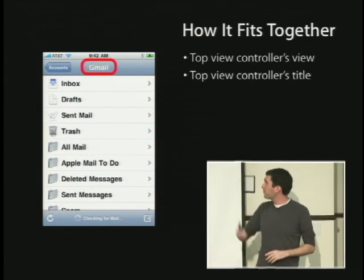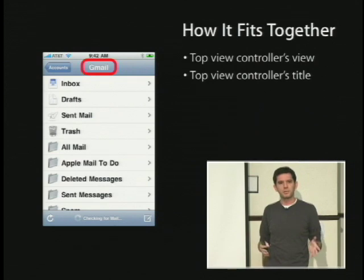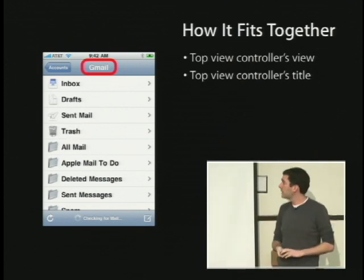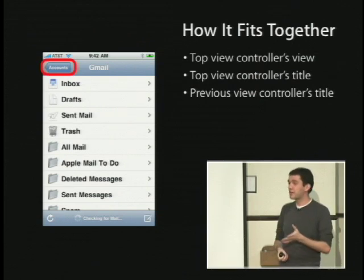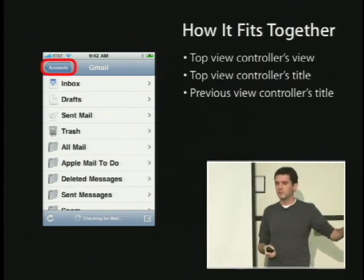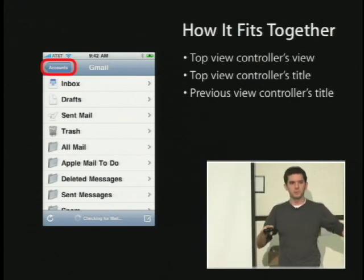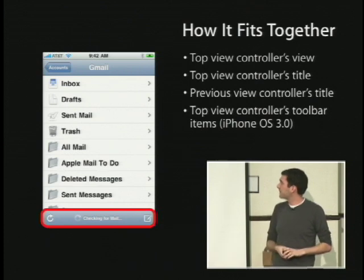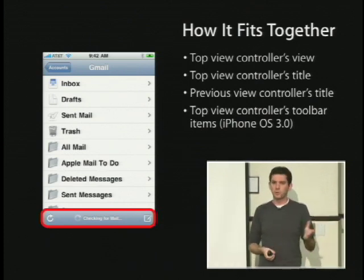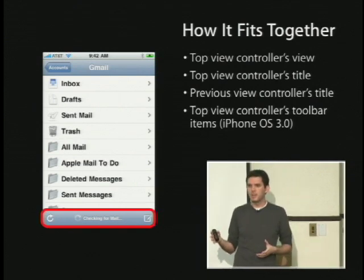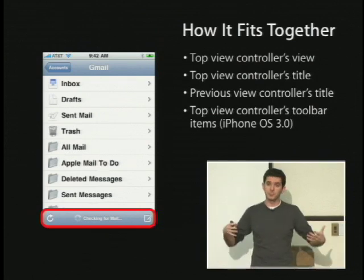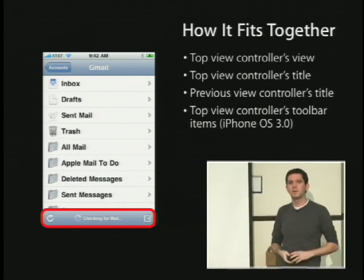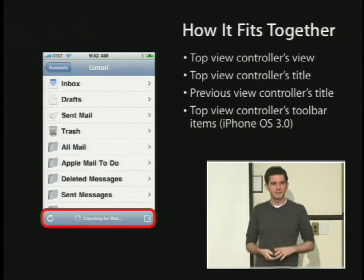At the top we have the view controller's title, which navigation controller displays in the navigation bar. On the left is the back button — its title is actually the title of the previous view controller on the stack. At the bottom, the toolbar comes from the top view controller: you have an array of items that appear in a toolbar, and you assign that array to a property on the top view controller. Navigation controller will put them in a toolbar at the bottom.